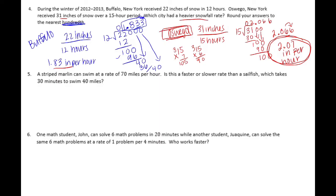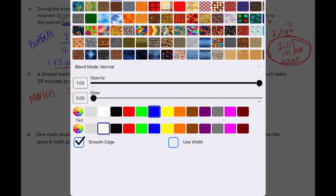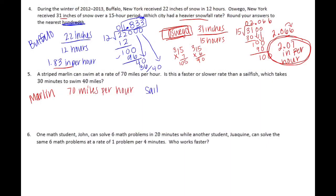Number 5: A striped marlin can swim at a rate of 70 miles per hour. Is this a faster or slower rate than a sailfish which takes 30 minutes to swim 40 miles? A striped marlin can swim 70 miles per hour. The sailfish takes 30 minutes to swim 40 miles. The first thing I notice is they're both in miles but we're talking in an hour and then this is in minutes, so they're not the same unit. What I need to do is either change them both to minutes or change them to hours. I know that one hour is 60 minutes.